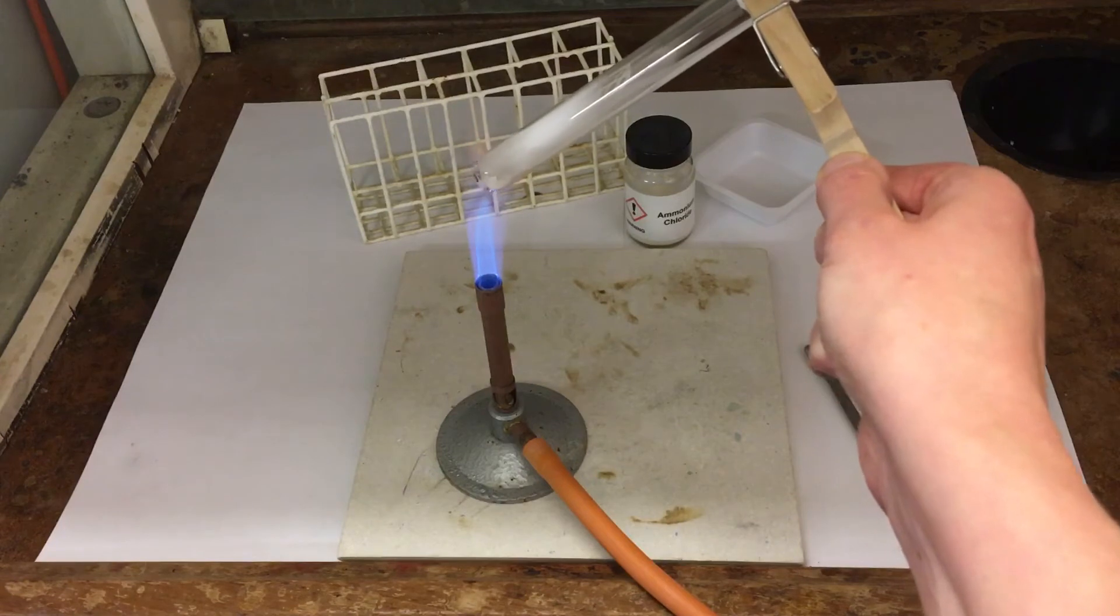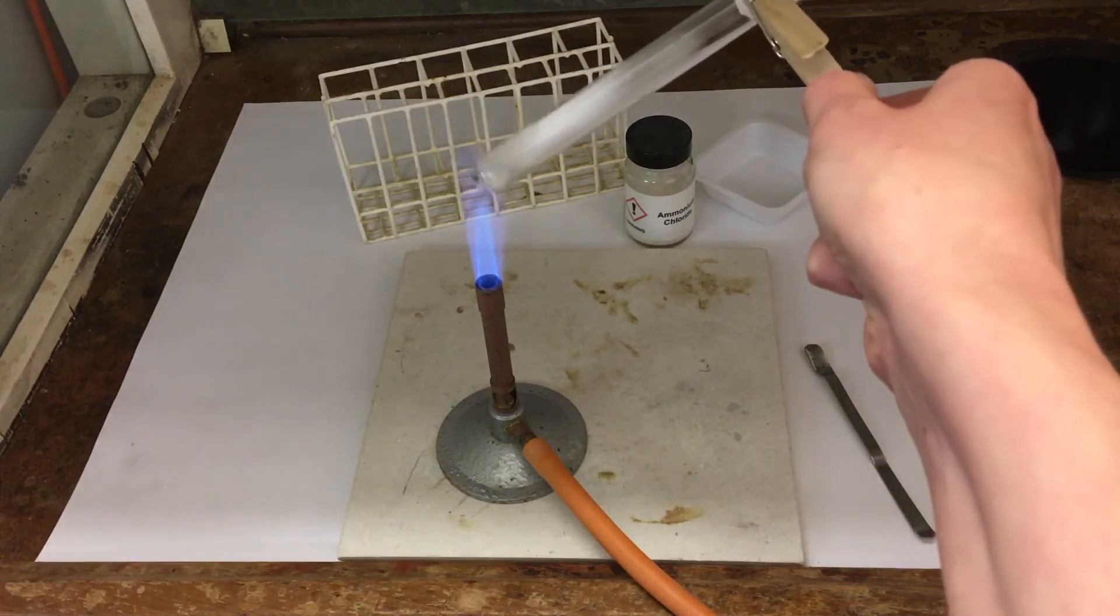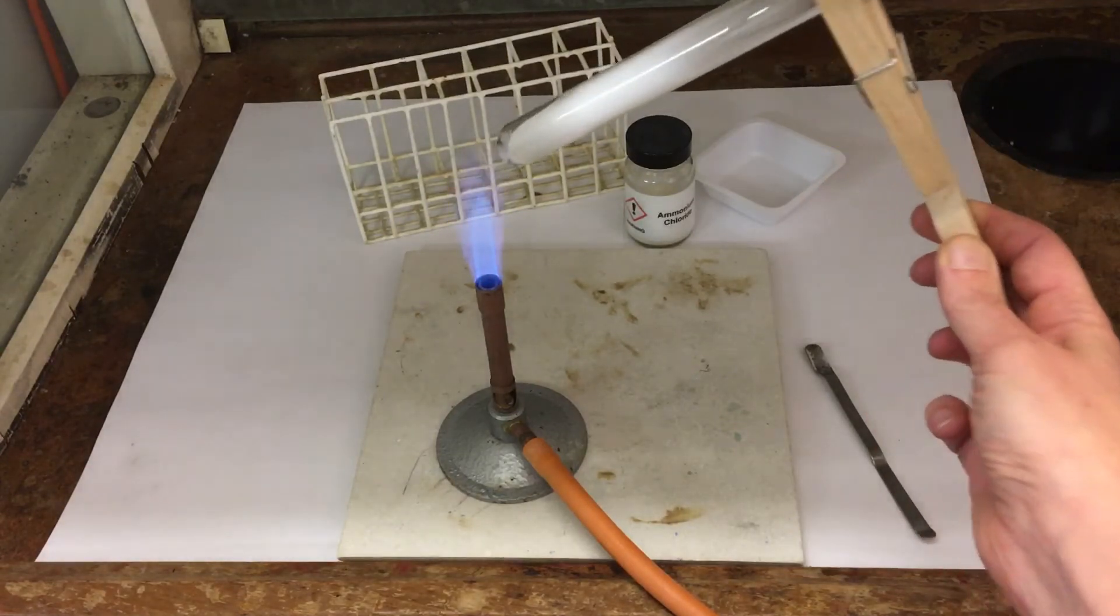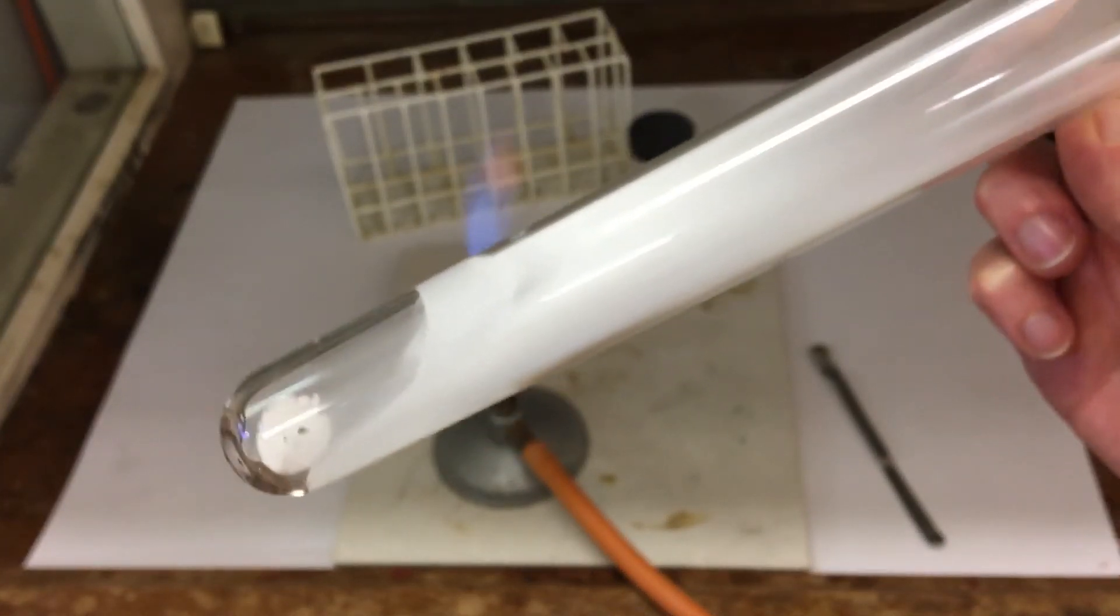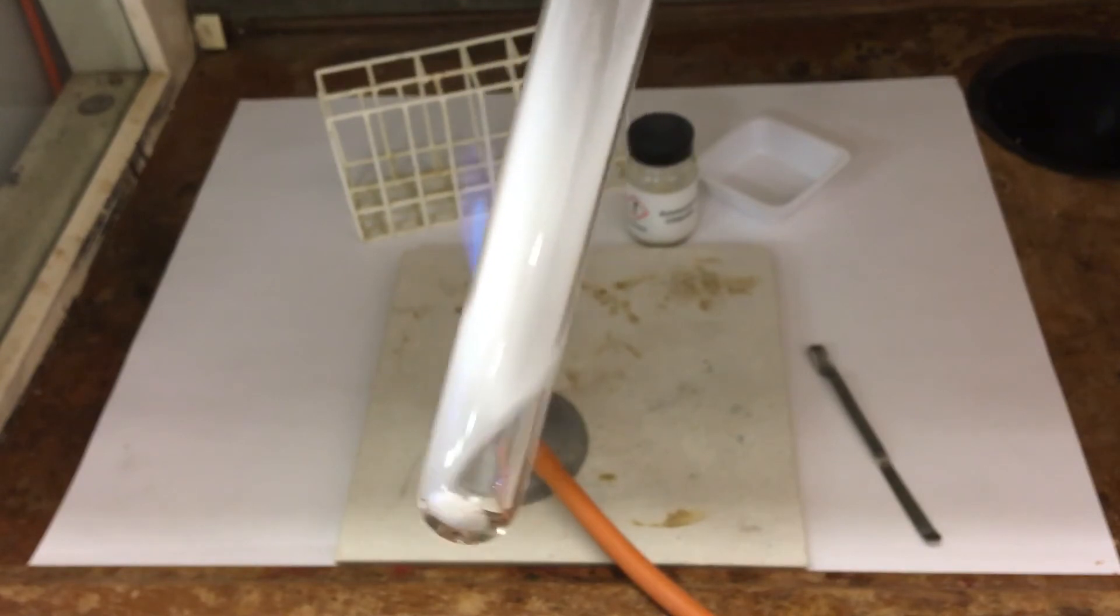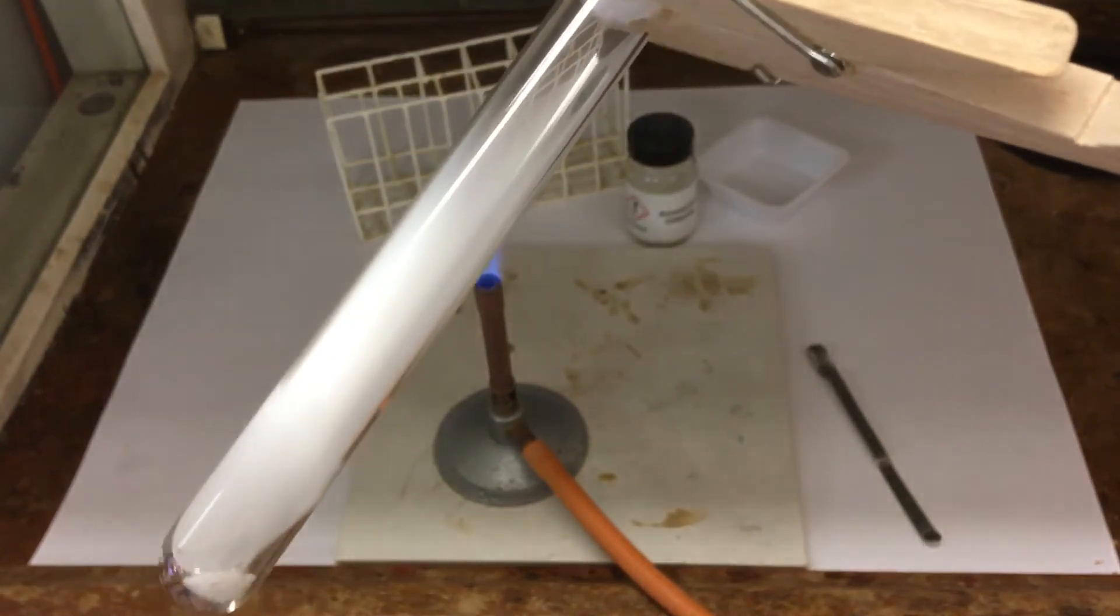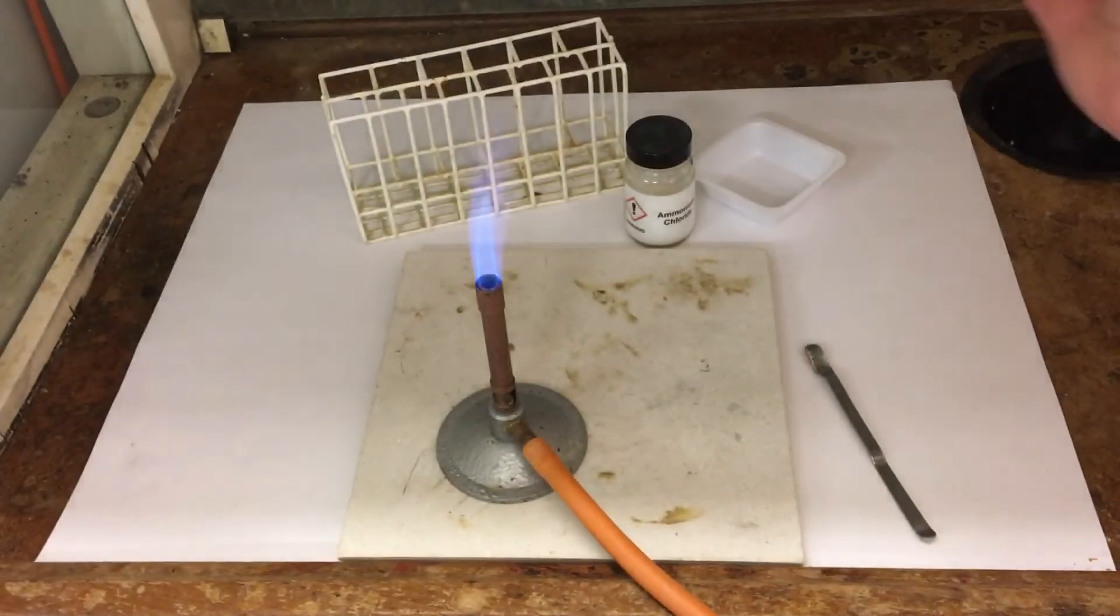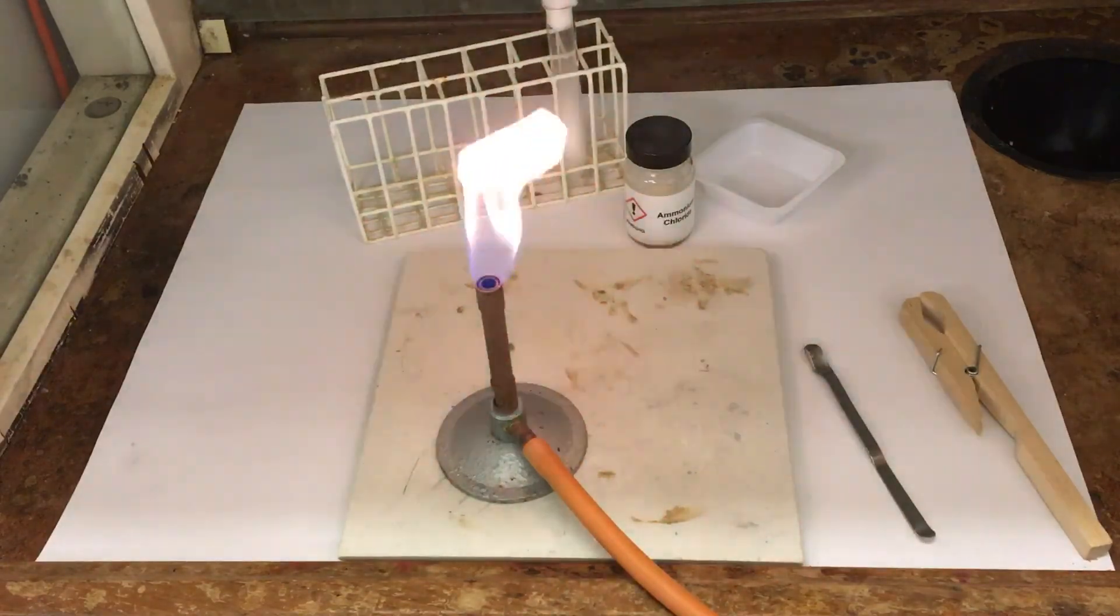As the gas moves up the test tube, it cools down and reacts together again to form ammonium chloride. We can see where the ammonium chloride is formed on the cooled glass.